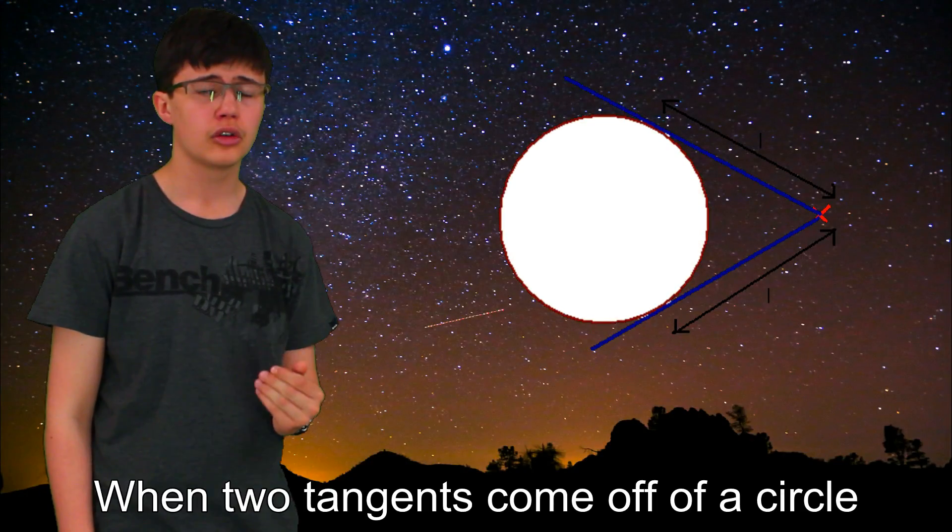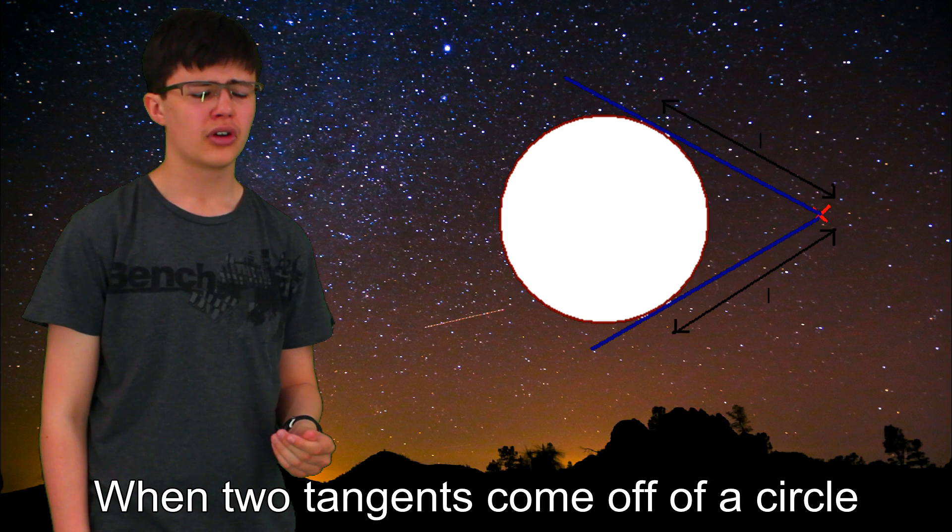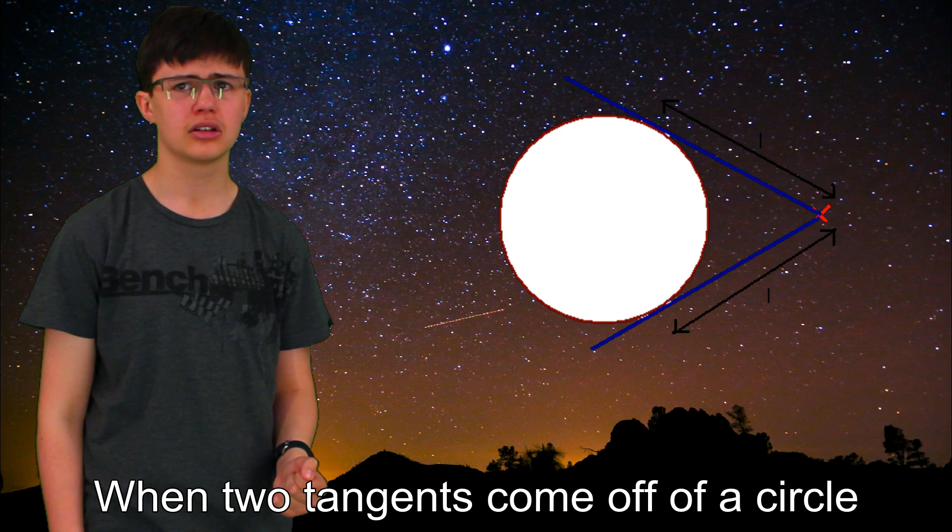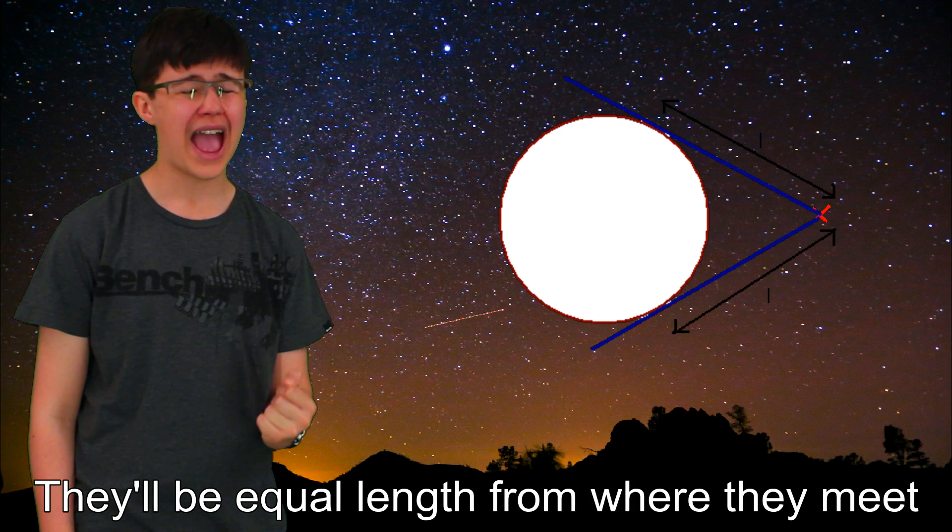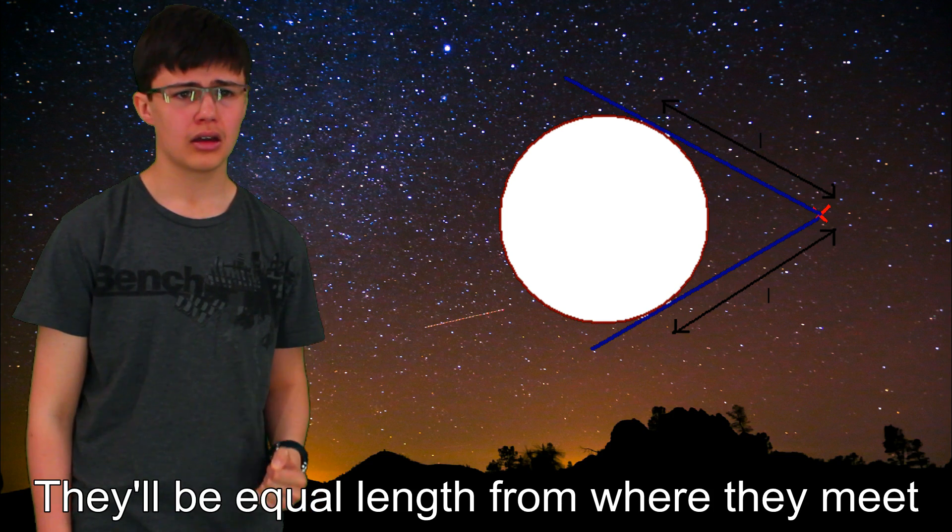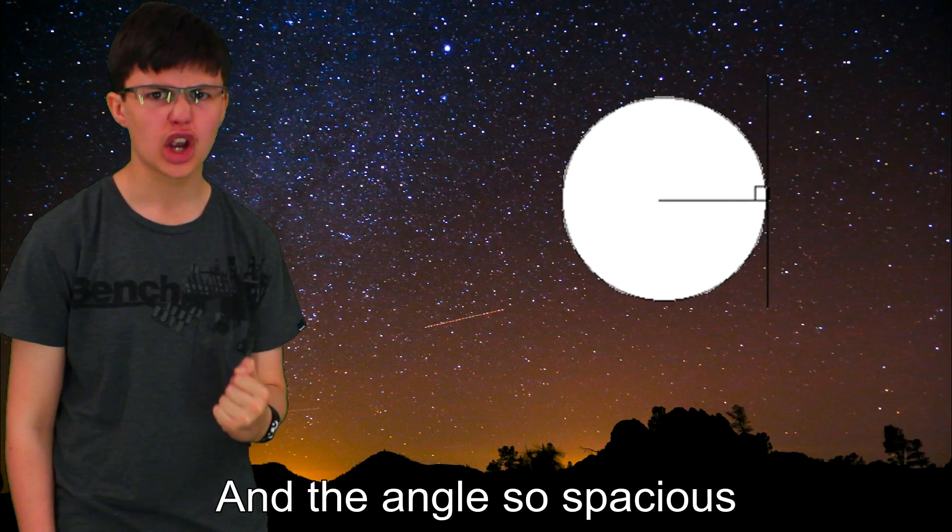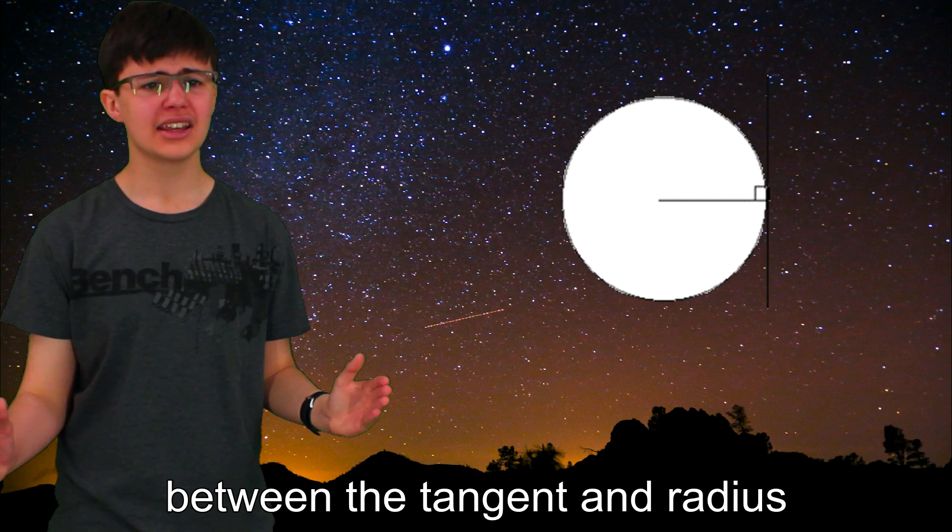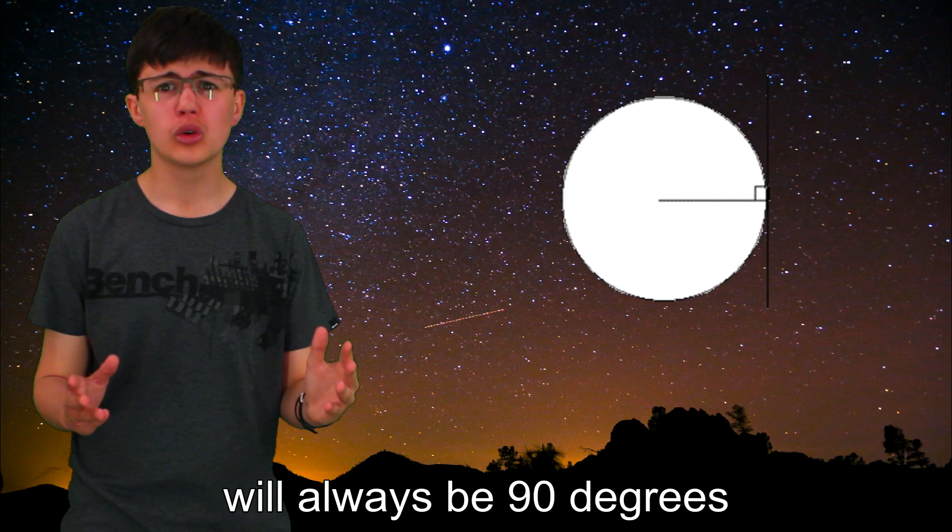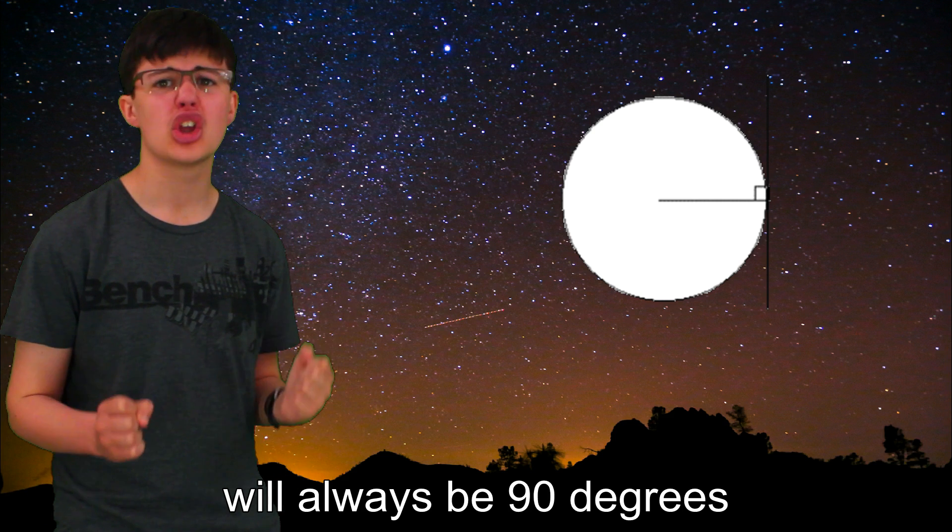When two tangents come off of a circle, they'll be equal length from where they meet. And the angle so spacious between the tangent and radius will always be 90 degrees.